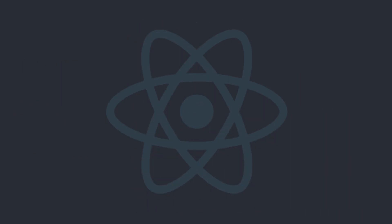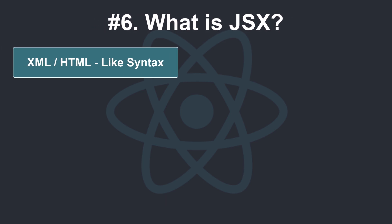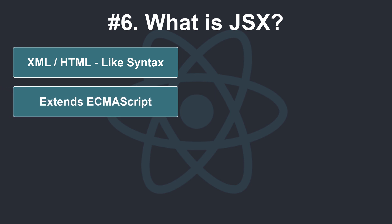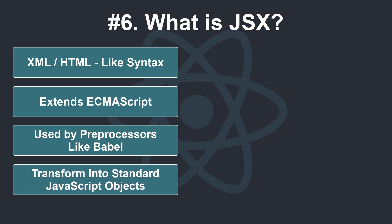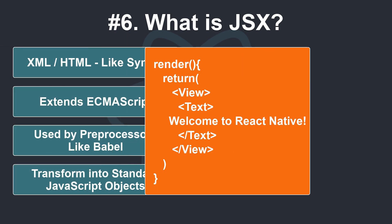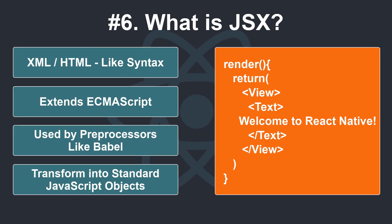What is JSX? JSX is an XML, HTML-like syntax used by React that extends ECMAScript, so that XML, HTML-like text can coexist with JavaScript React code. The syntax is intended to be used by preprocessors, i.e. transpilers like Babel, to transform HTML-like text found in JavaScript files into standard JavaScript objects that a JavaScript engine will parse. For example, the text inside a view tag is returned as a JavaScript function to the render function.